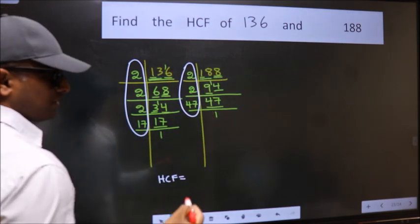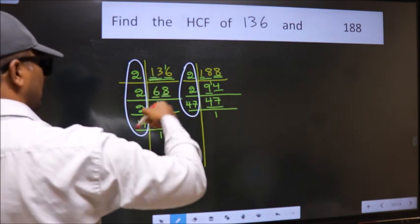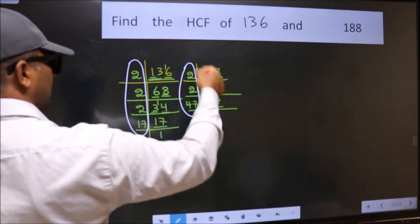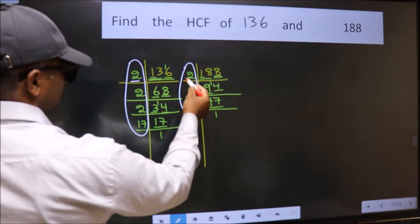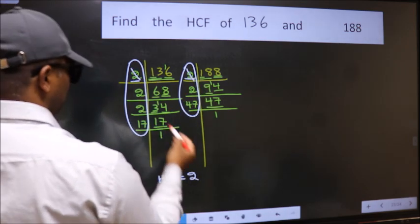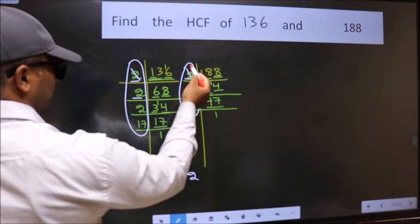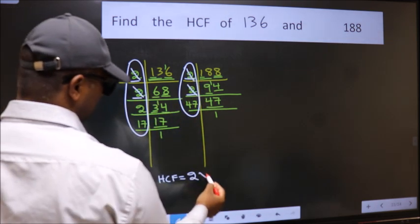So, now let us find the numbers which should be present here and here. Starting with the number 2. Do we have 2 here? Yes. So, cut 2 right here. Next number 2. Do we have 2 here? Yes. So, cut 2 right here.